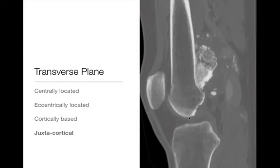Next is juxtacortical. By juxtacortical, we mean that the tumor is arising next to the cortex — the cortex itself is preserved, and the medullary space is preserved, but the tumor is arising just adjacent to it. Things that like to do this are paraosteal or periosteal osteosarcoma, or things like a juxtacortical chondroma.